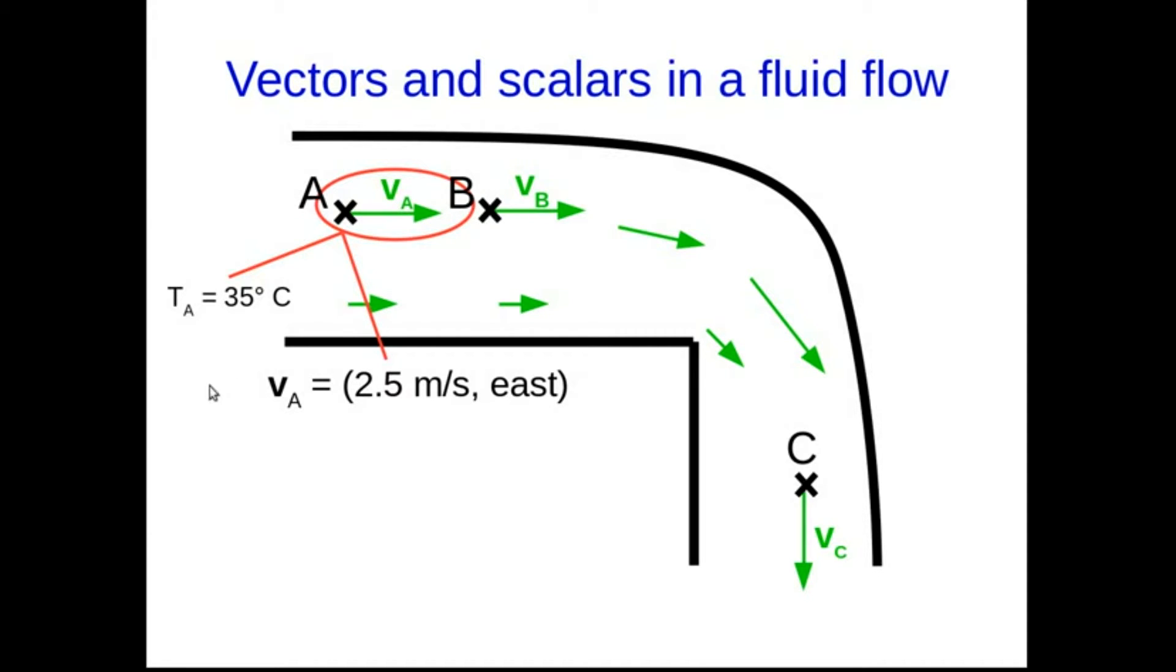And now note something. Let's suppose VB was also 2.5 meters per second east. Now VB is drawn at a different location here, but it has the same magnitude in the same direction. So those are equal, even though we've drawn them at different locations. You can slide a vector around, as long as you don't change its size or the direction it points, it stays the same vector.